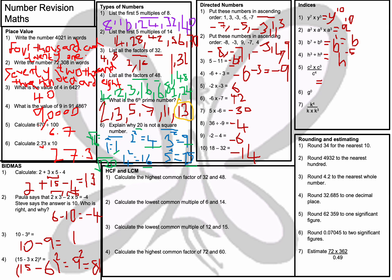Question number 5: working out the numerator first — multiplying, so I add the powers on top: 2 plus 3 gives c⁵. Then divided by c⁴, subtracting the powers: c to the power of 5 minus 4, which is 1. So the answer is just c.